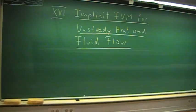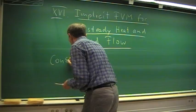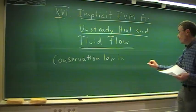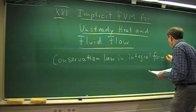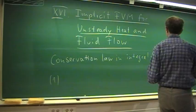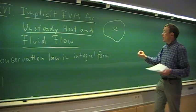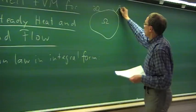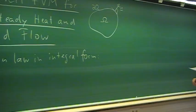We consider again a conservation law in integral form, as discussed in chapter 11. Since we are using the finite volume method, the starting point is always the integral form. We consider a control volume Ω with boundary ∂Ω. With a tangent to the surface, we can define the unit normal vector n to that surface.